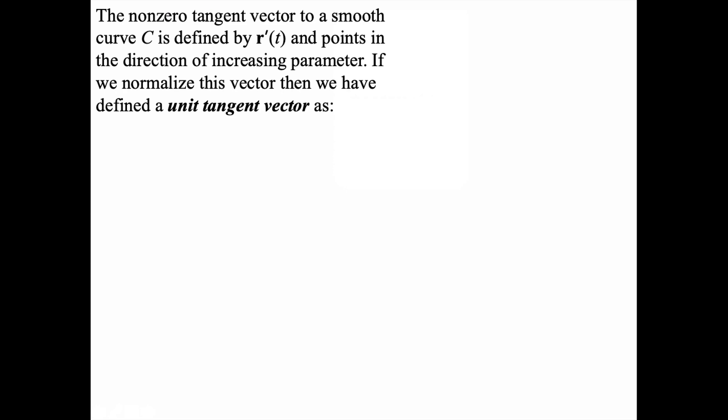In multivariable calculus, students often learn that the non-zero tangent vector to a smooth curve C defined by r'(t) points in the direction of increasing parameter. If we normalize that vector, it will be a unit vector, hence we come up with the term unit tangent vector. The formula for that is T(t) = r'(t) / ||r'(t)||.